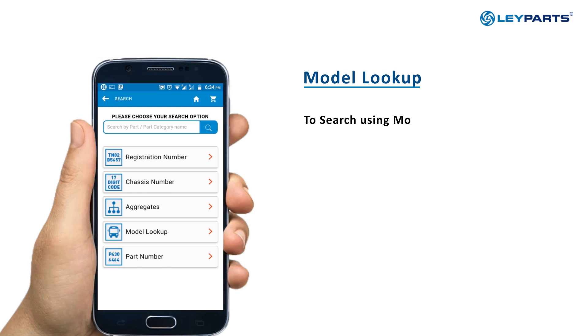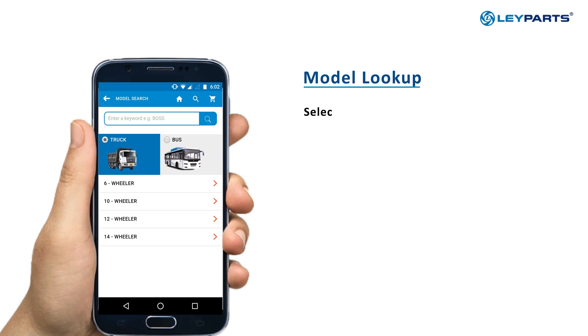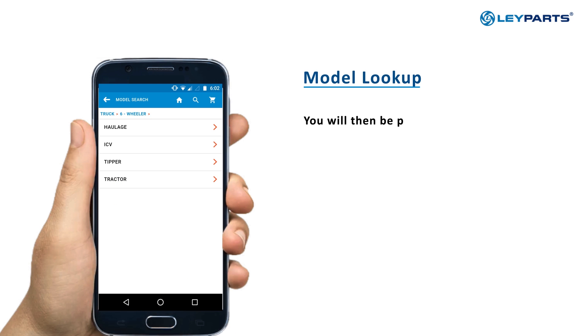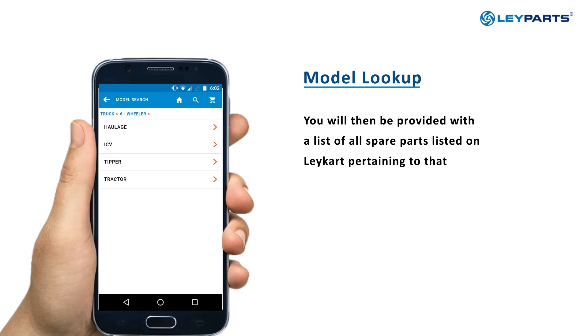Search Using Model Lookup: Select the appropriate truck or bus model from the options provided. You will be provided with a list of all spare parts listed on Laycart related to that model.